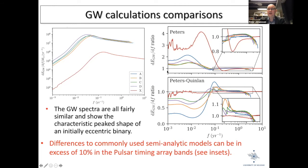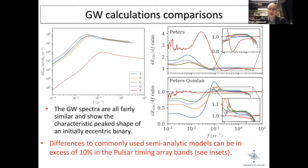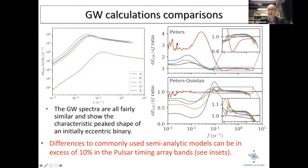In the pulsar timing array frequency window, the differences between KETJU and the analytic approximations are only at the 10 percent level — pretty good agreement. The semi-analytic approaches used in previous studies are actually quite good and definitely not way off. Of course, the stellar scattering formula constants need to be calibrated for the specific simulation environment — whether you have a cuspy or core stellar environment will make a significant difference.